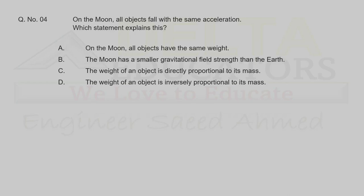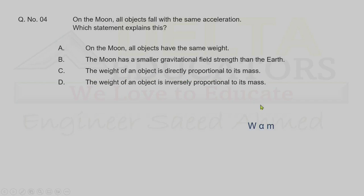Question 4. On the moon, all objects fall with the same acceleration. Which statement explains this? Option A — all objects have the same weight — is incorrect, because weight is directly proportional to mass. Option B — the moon has smaller gravitational field strength than Earth — is true but not relevant. Option C — weight is directly proportional to mass — is correct. Correct option is C.